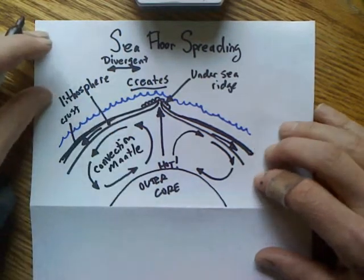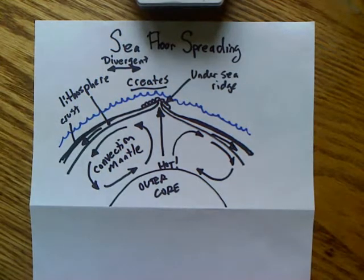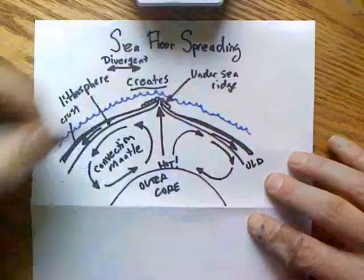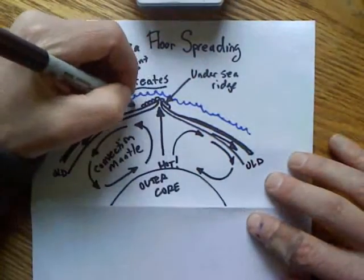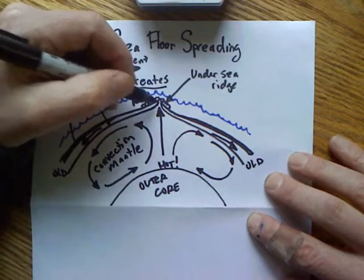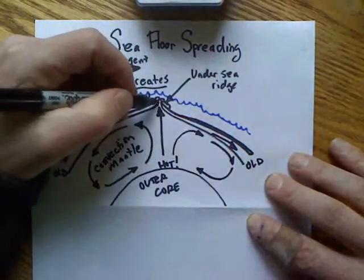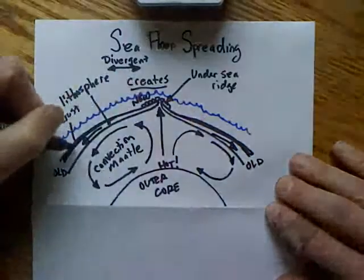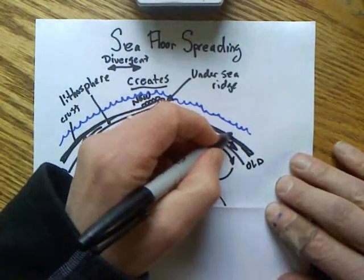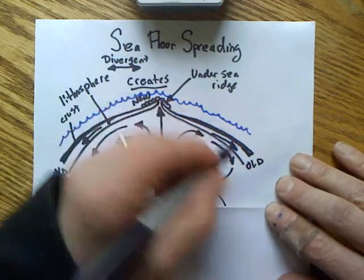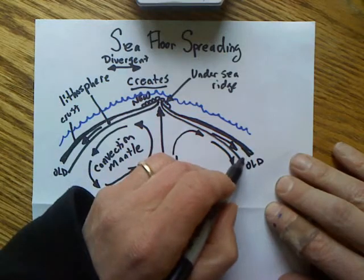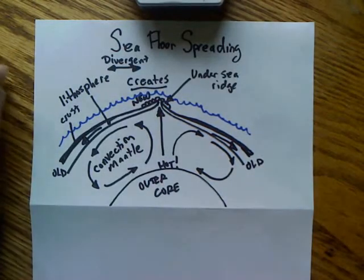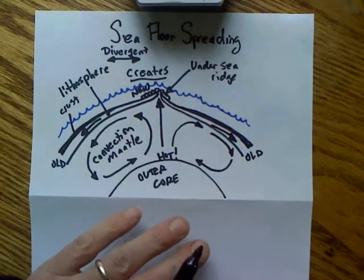So that is seafloor spreading. Next we're going to draw subduction, but before we do, we want to label this section as 'old' and this as 'new.' This is new plate, new rocks, and this is old. In the middle it's going to be thinner because it's just been created — there's been very little time for sediment to accumulate. However, as you go out from the center, the lithosphere gets thicker and thicker because sediment is coming down over millions of years and accumulating, so the whole plate is actually thicker here when you include the sediment. So it's thicker here, thinner in the middle, newer here, and older there. That concludes seafloor spreading; next we'll draw subduction.